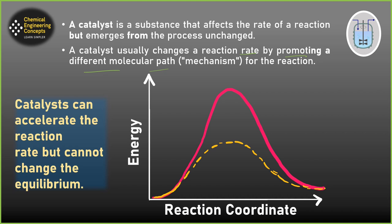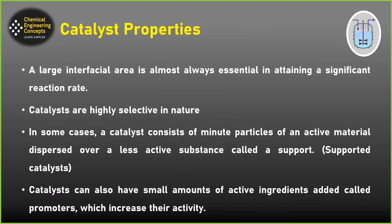In this energy diagram — energy versus the reaction coordinate — we have the pink curve showing the normal reaction. When we add a catalyst, the activation energy reduces. Now the molecules need lower energy to form products, so the molecular path actually changes by adding a catalyst. Importantly, a catalyst can accelerate the reaction but it does not have any effect on the equilibrium — the equilibrium is not going to change.